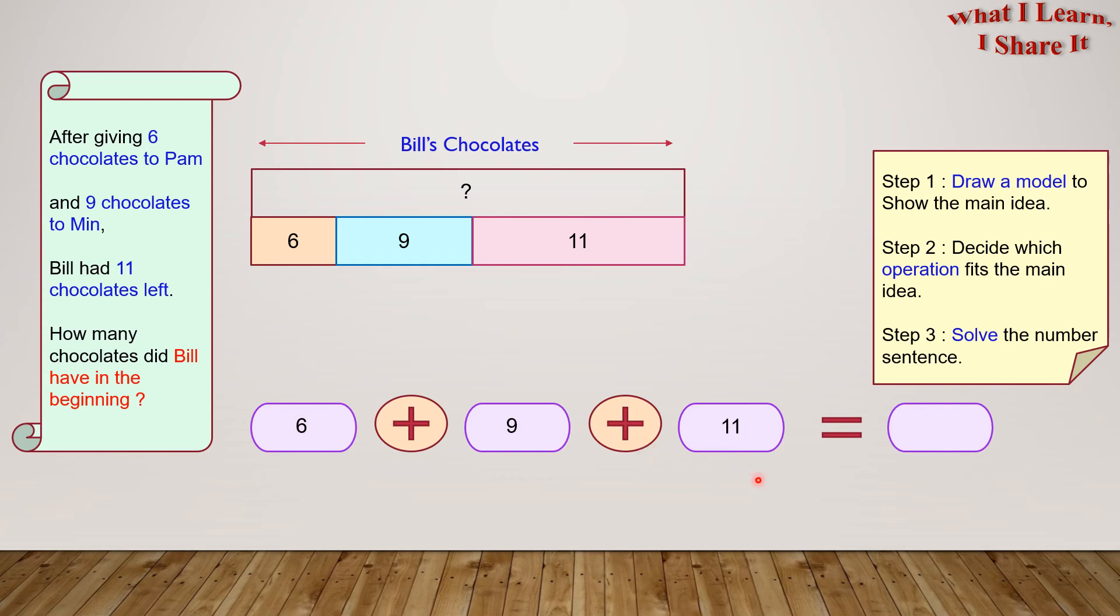Plus 11, which comes from here, equals 26. We can put that in place of our question mark. So, Bill had 26 chocolates in the beginning. Yay! We solved the problem!